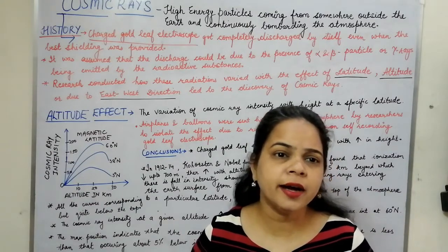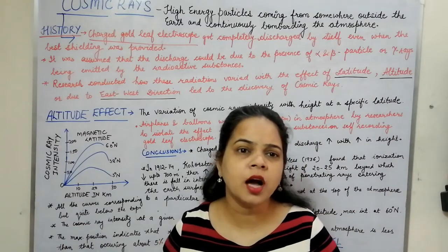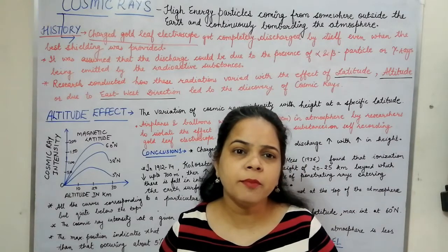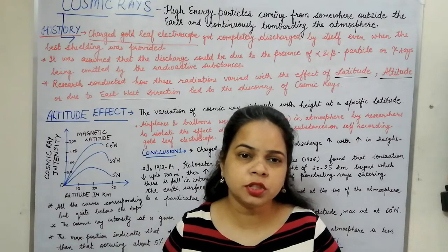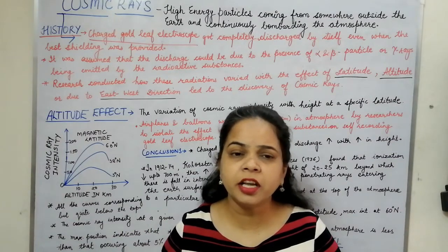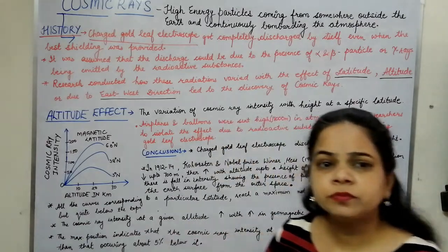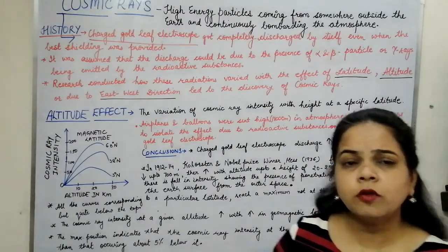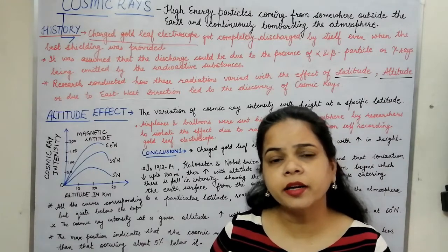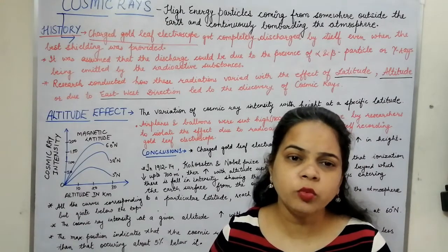Initially, they thought that there might be some alpha particles, beta particles, or gamma radiations being emitted by some radioactive sources. So alpha, beta, and gamma rays were thought to be the major reason for the discharge of the gold leaf electroscope. But to overrule the presence of alpha, beta, and gamma from radioactive sources, other methods were also employed to investigate why the gold leaf electroscope was discharging.